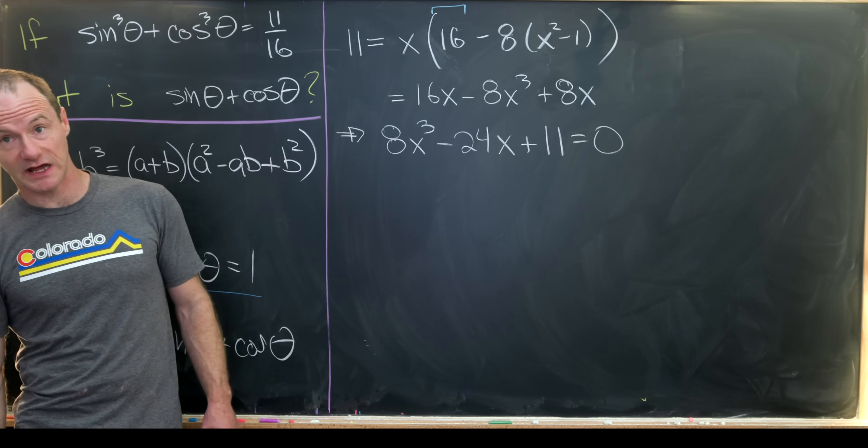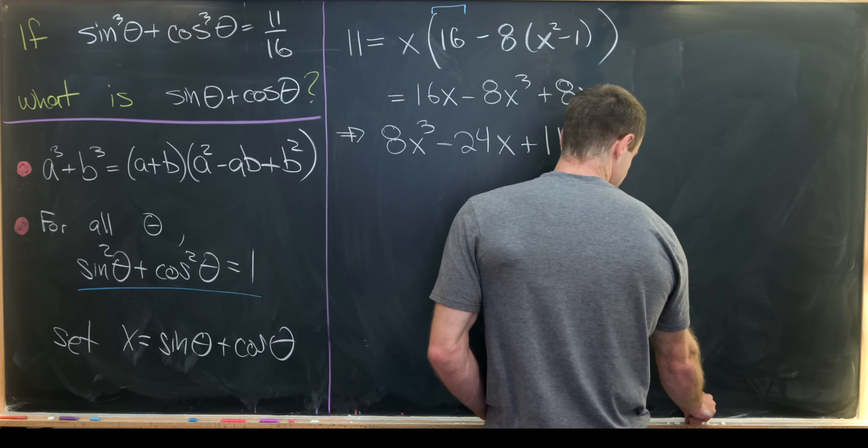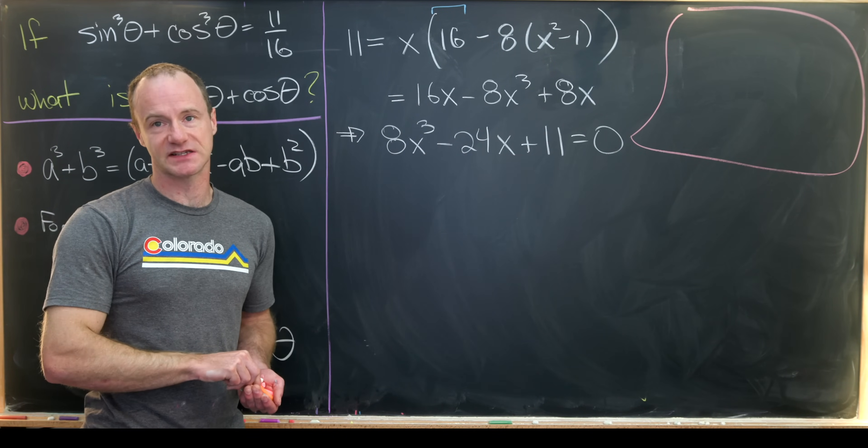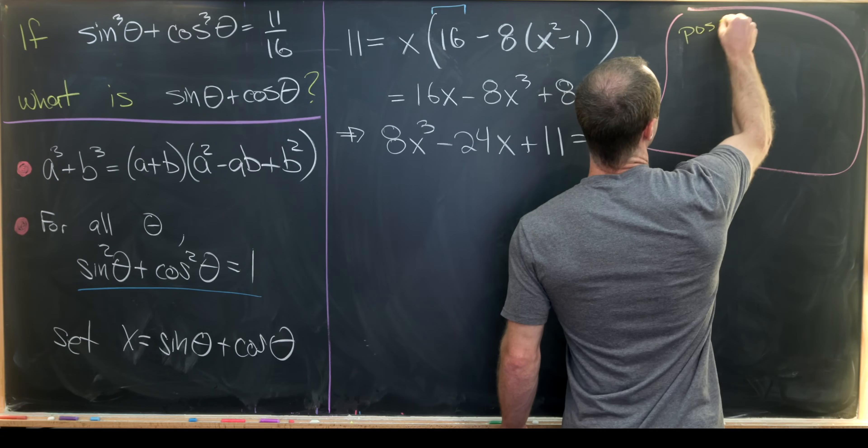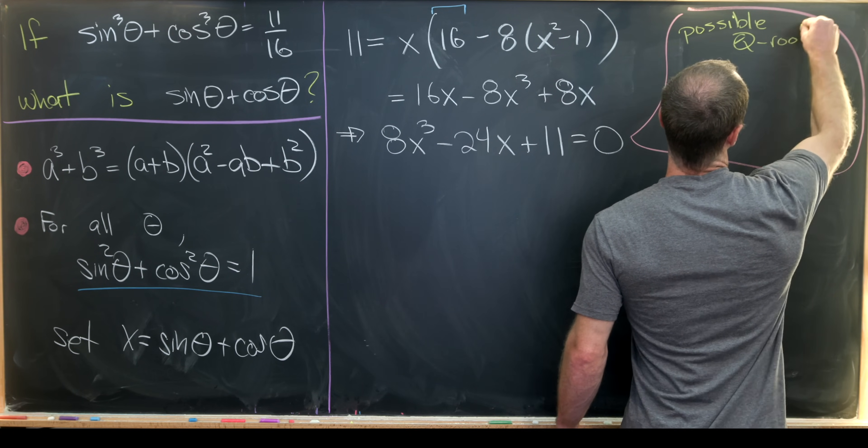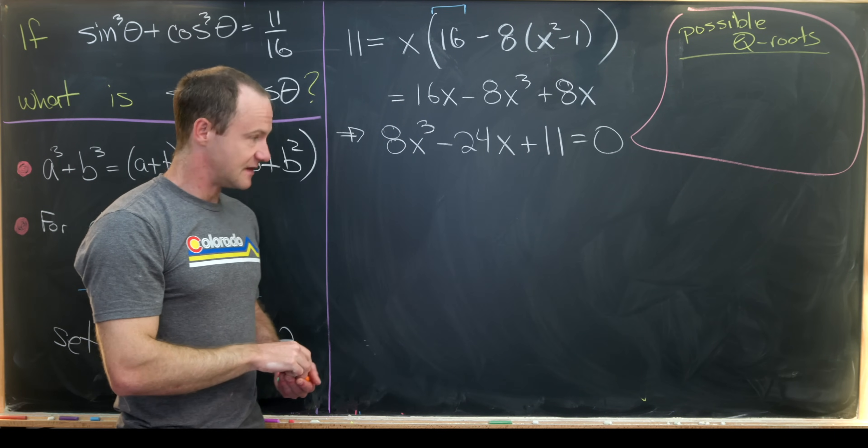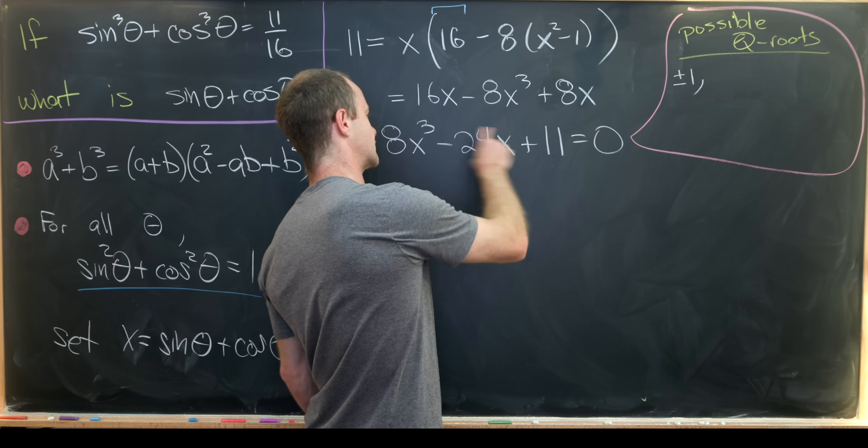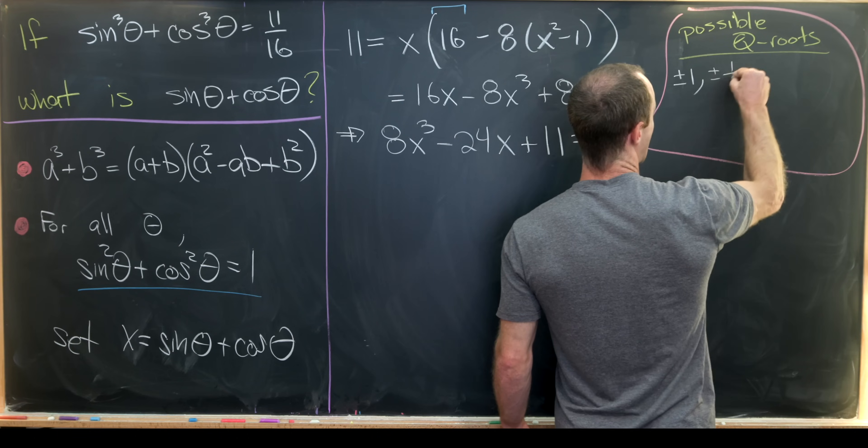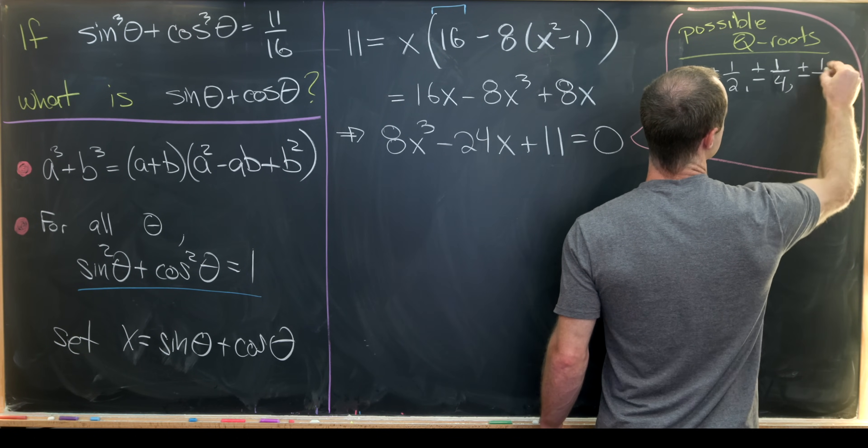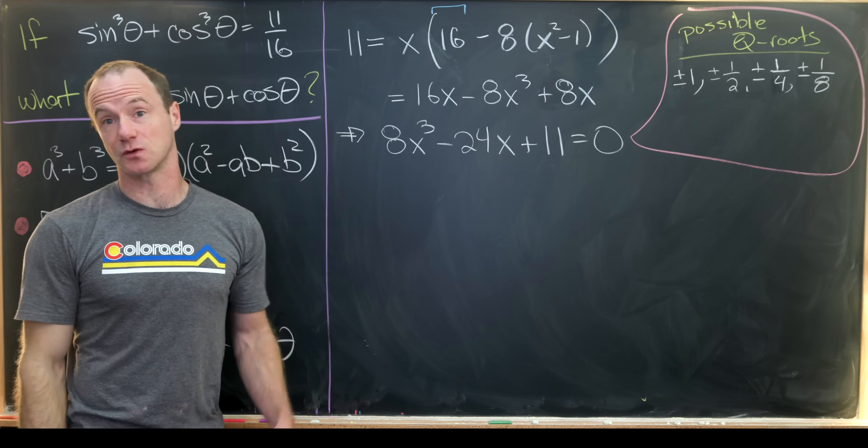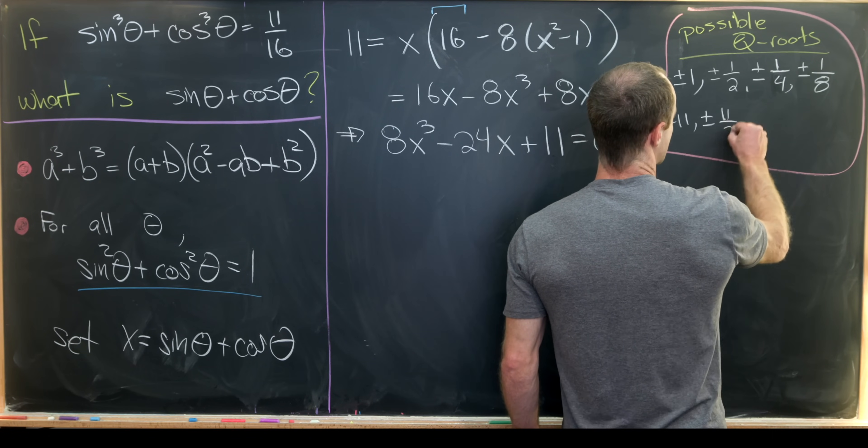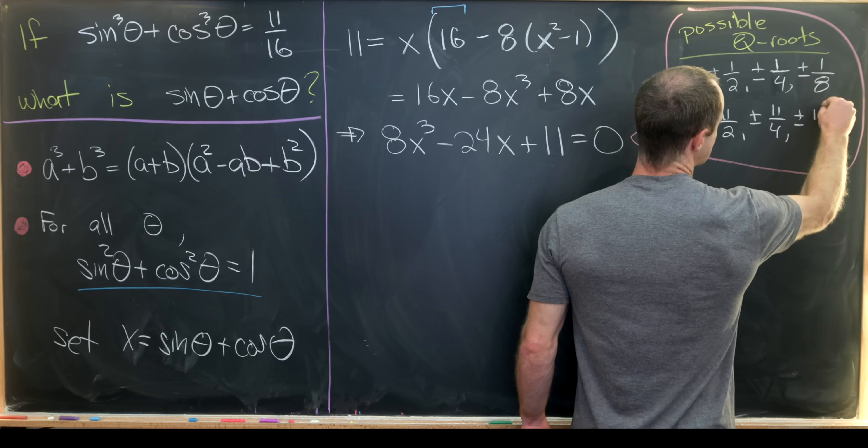Now cubic polynomials are in general tricky to solve. But we can use something called the rational root theorem to see what the possible rational roots are and then test those. Let's recall that our possible rational roots will be equal to plus minus the factors of 11 over the factors of 8. So that'll be plus minus 1, plus minus half, plus minus quarter, as well as plus minus 1 over 8, and then we also have plus minus 11, plus minus 11 over 2, plus minus 11 over 4, and plus minus 11 over 8.